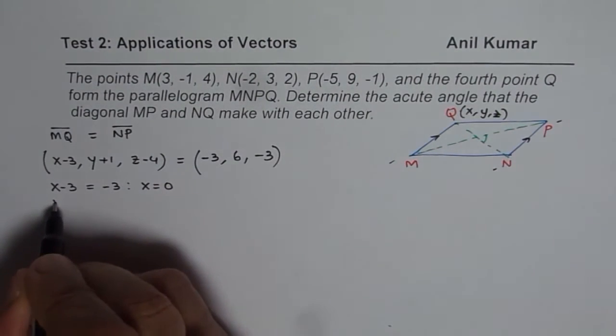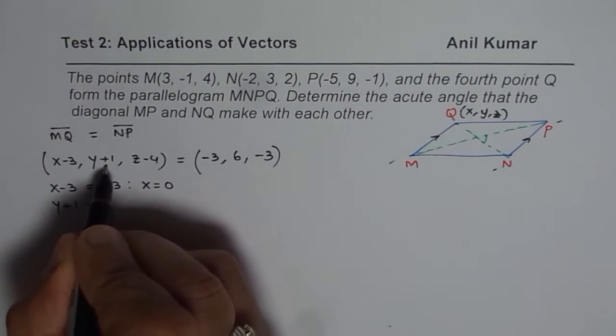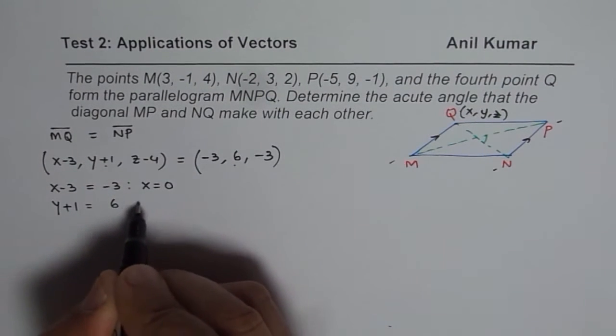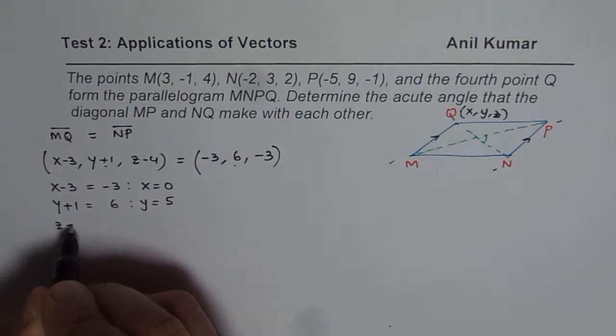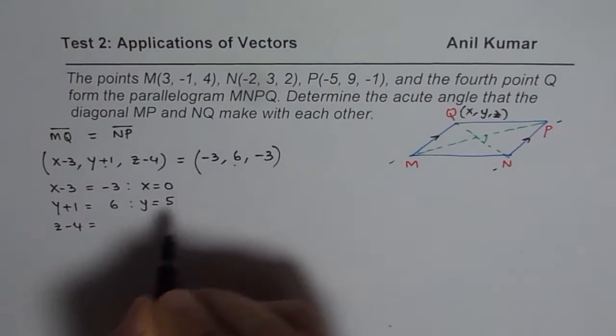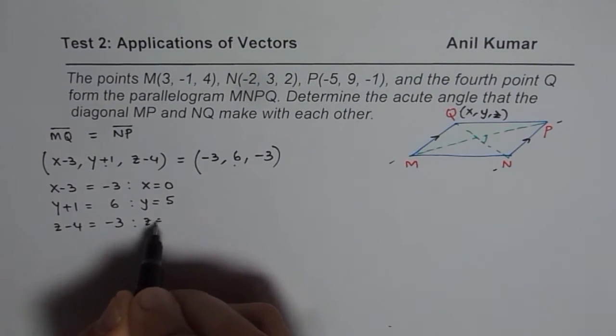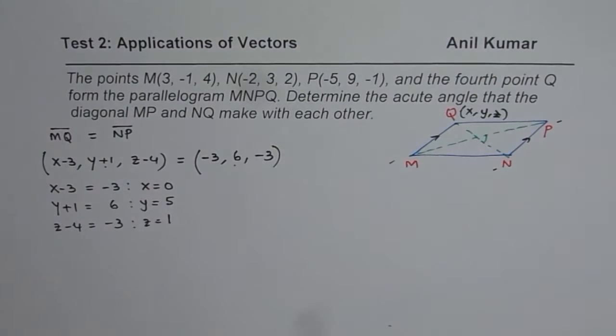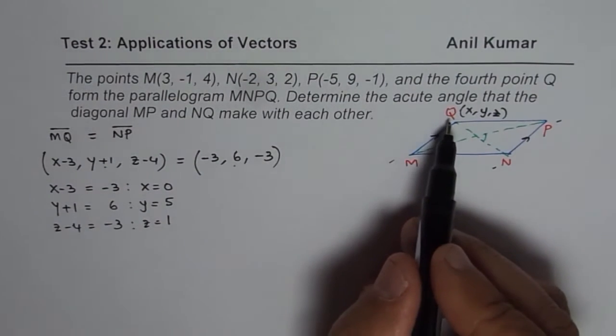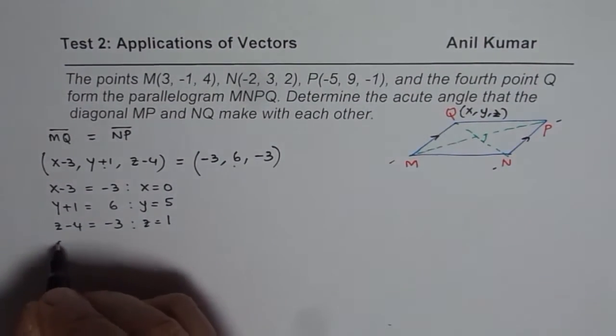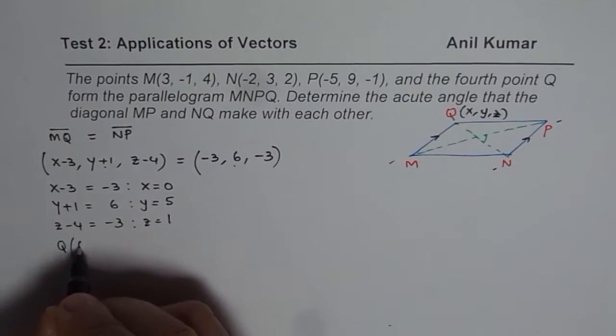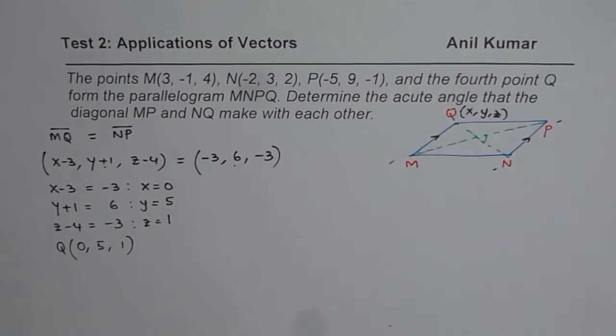The second one is y + 1, we are comparing these two, is 6. And that gives you y should be 5. And the last one here is z - 4 is equals to -3. And that gives you z equals to -3 + 4, which is 1. So we get the coordinate points for Q. And Q is (0, 5, 1) for us. So first step is find the coordinates of point Q.